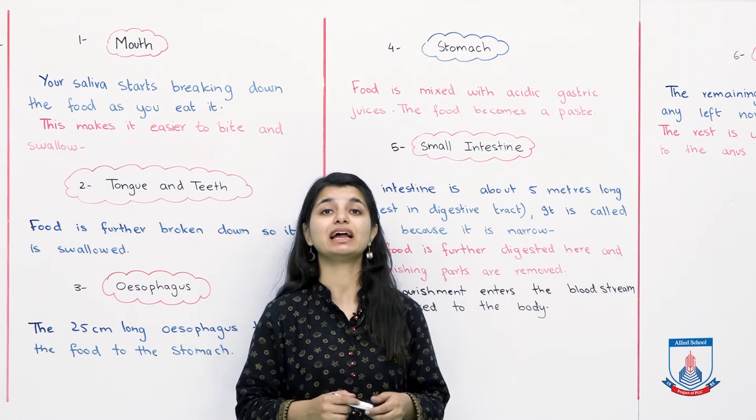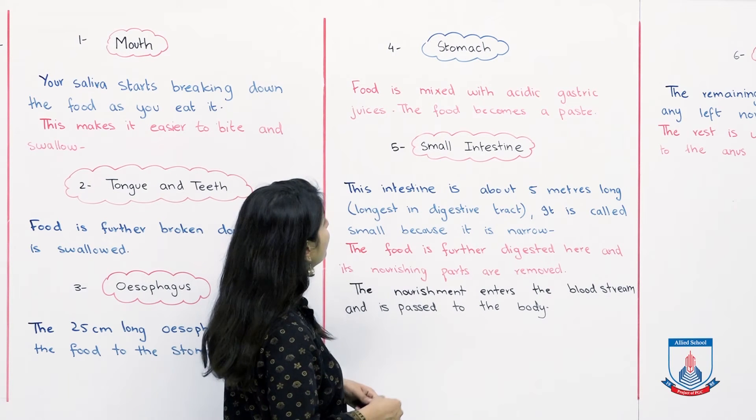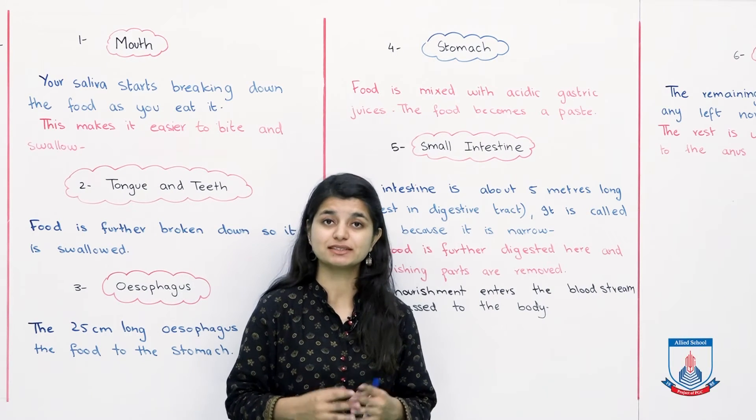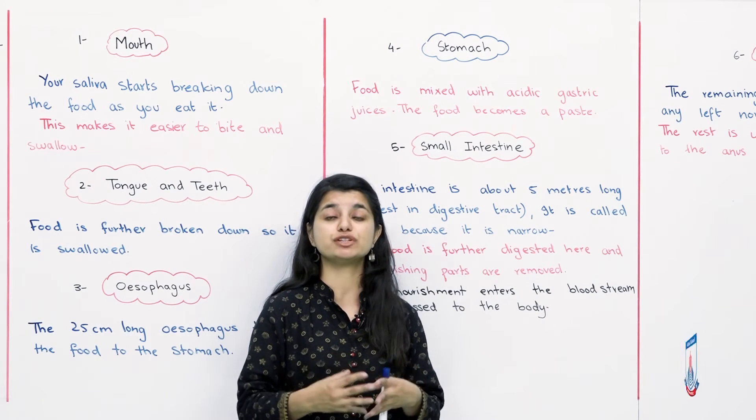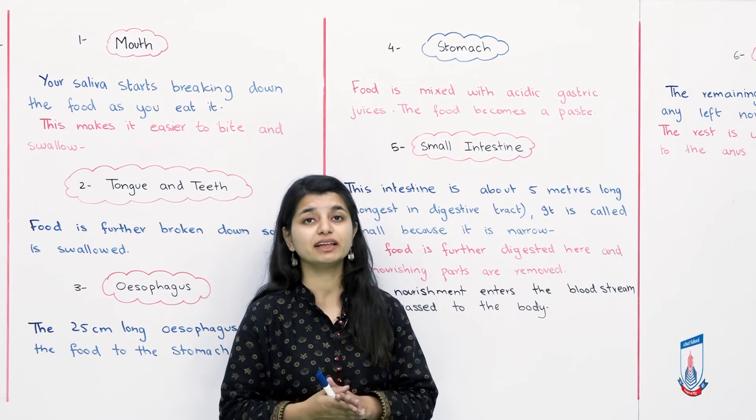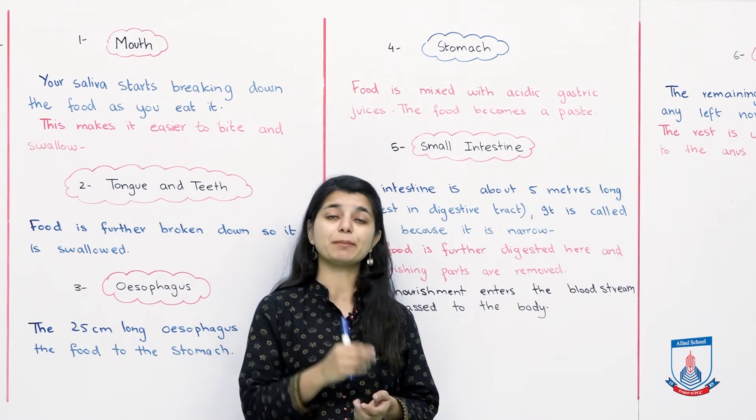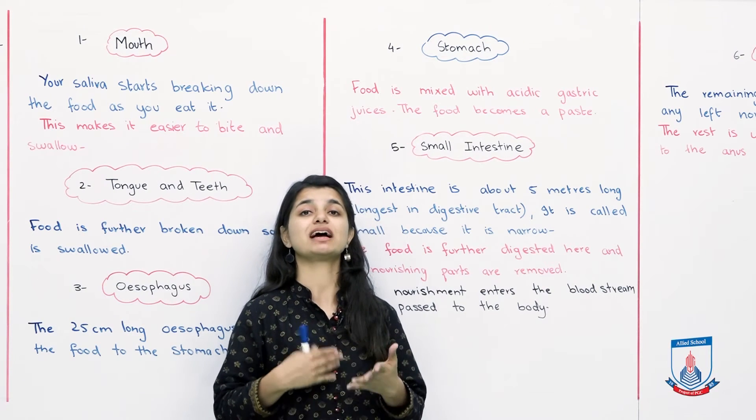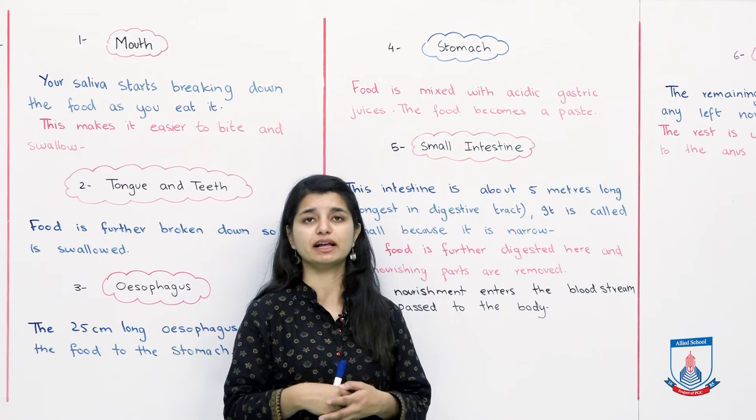Now in step 4, food enters your stomach. In your stomach, food is mixed with acidic gastric juices and the food becomes a paste. There are a lot of gastric juices that your stomach produces and secretes. When the food enters your stomach, the gastric juices affect the food, further softening and breaking it down into a paste. So the solid food you ate becomes a thick liquid paste in your stomach, so that nutrients like proteins and carbohydrates can be extracted from it.